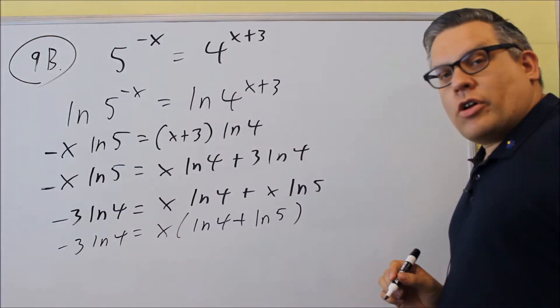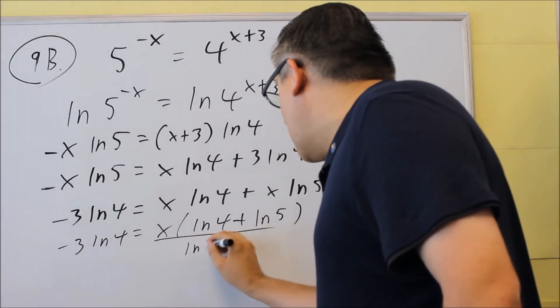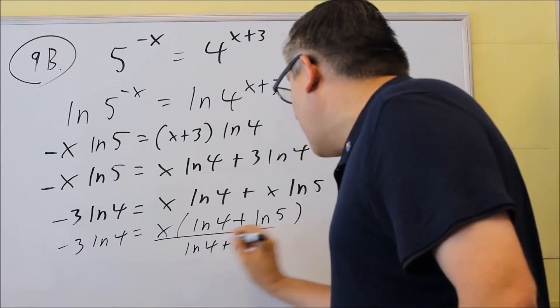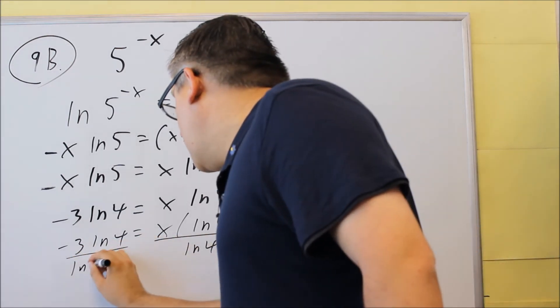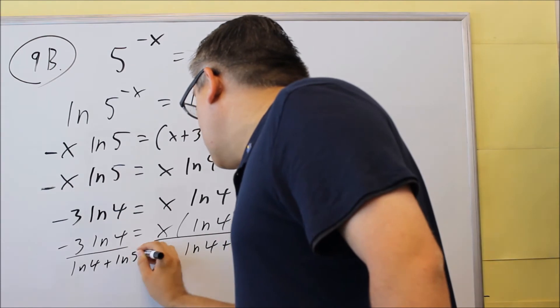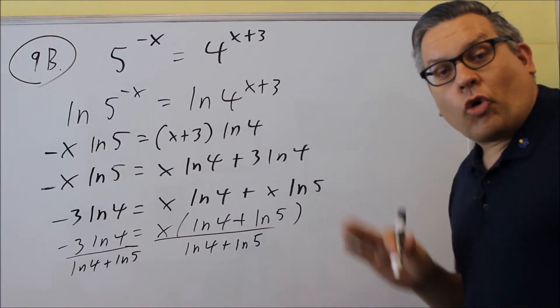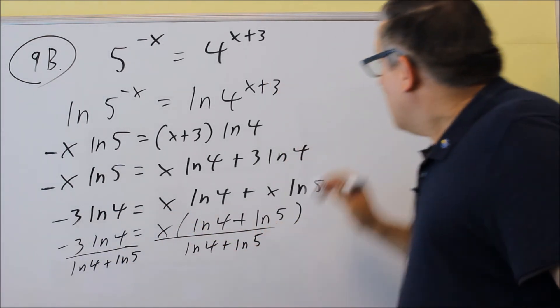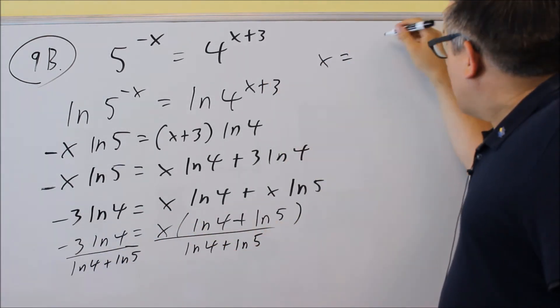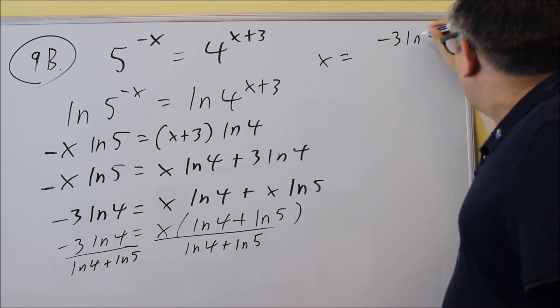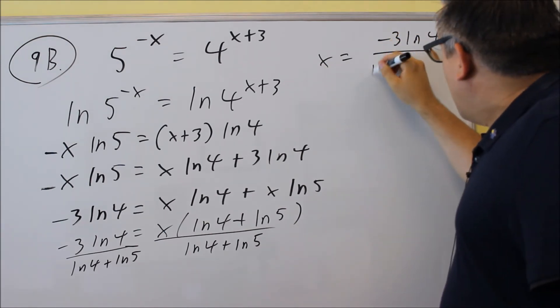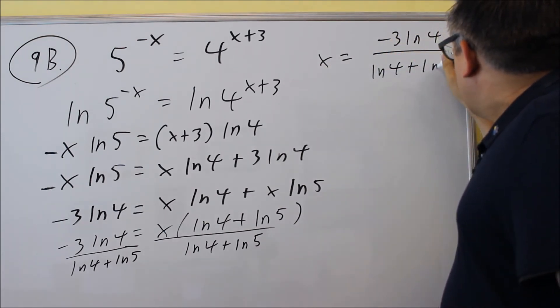The last thing that you want to do is you're going to divide both sides by ln 4 plus ln 5. And then you can just leave your answer. It says on the test you may leave your answer in terms of logarithms, so you don't have to worry about trying to put this into a decimal. You want to just leave it as that. So here's what your final answer would be, negative 3 ln 4. On the bottom we have ln 4 plus ln 5.